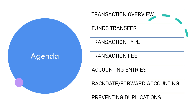The fifth topic is Accounting Entries. Behind every transaction lies a symphony of debits and credits — we'll peek into the ledger and understand the financial choreography. In this topic, we will learn together how to query and accurately identify accounting entries of a transaction in general, as well as funds transfer transactions in particular.